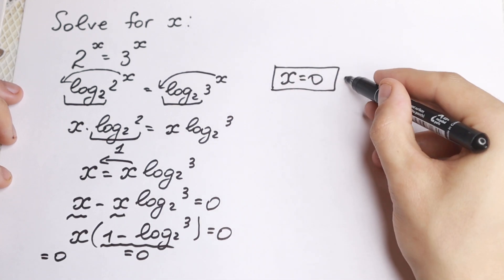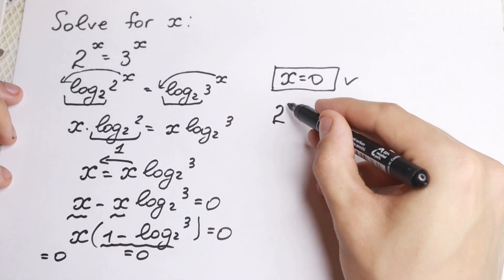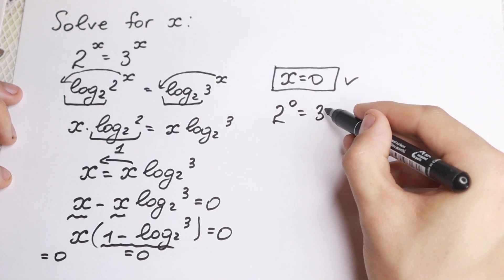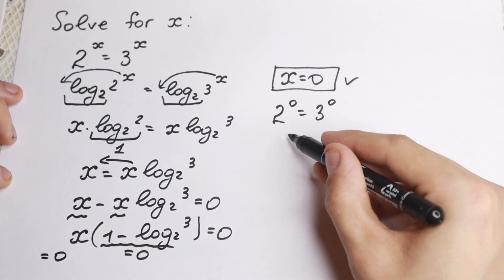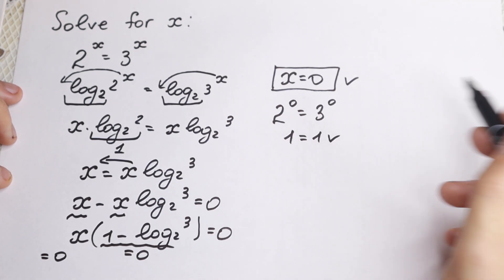Let's check this root. It's absolutely correct because 2 to the 0 equal to 3 to the 0, which is to say that 1 equal to 1, which is absolutely correct.